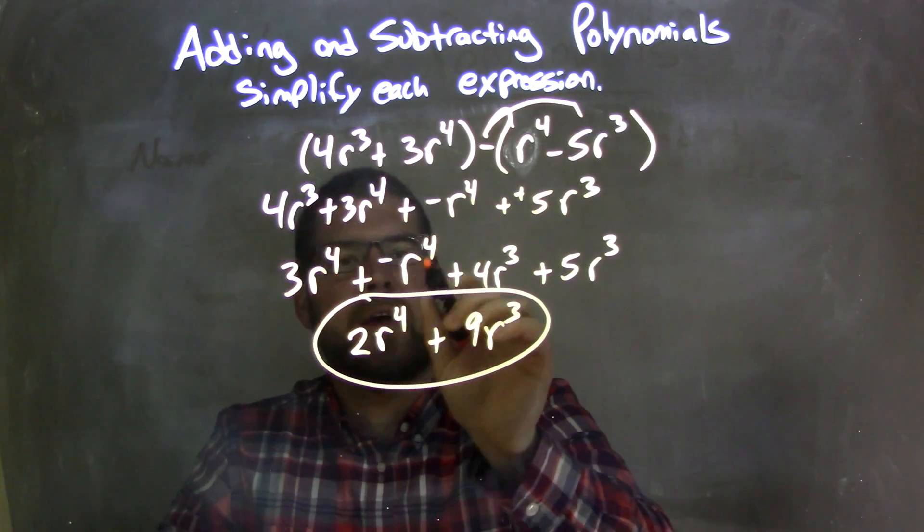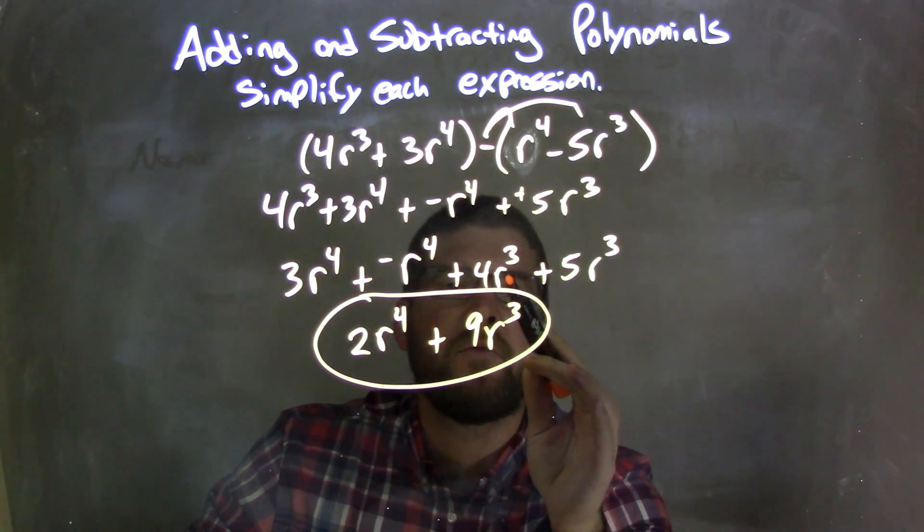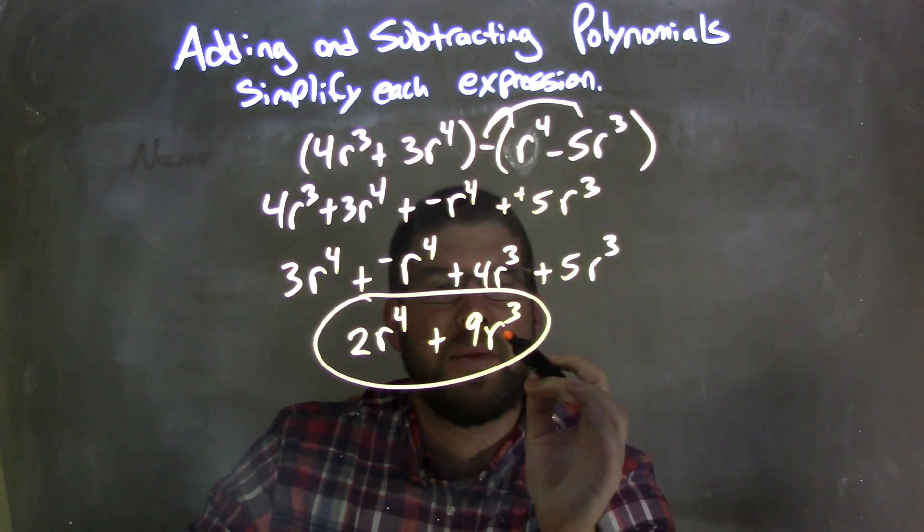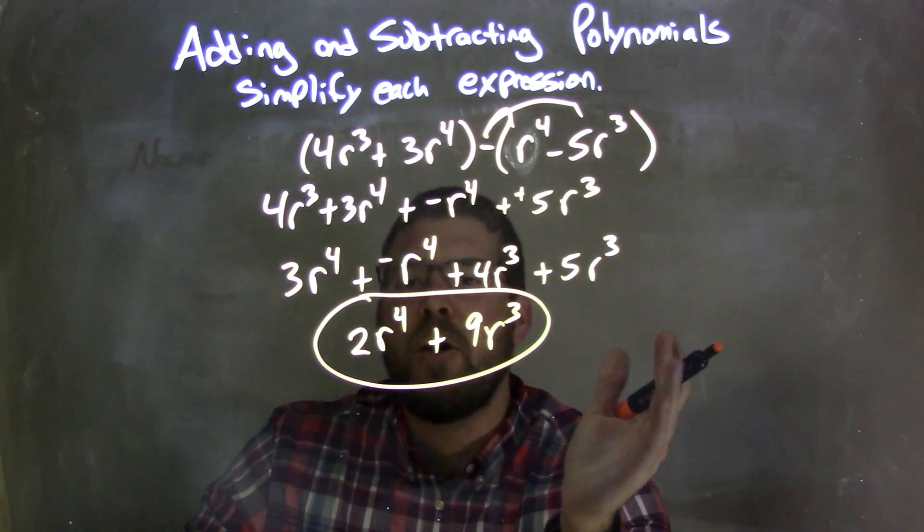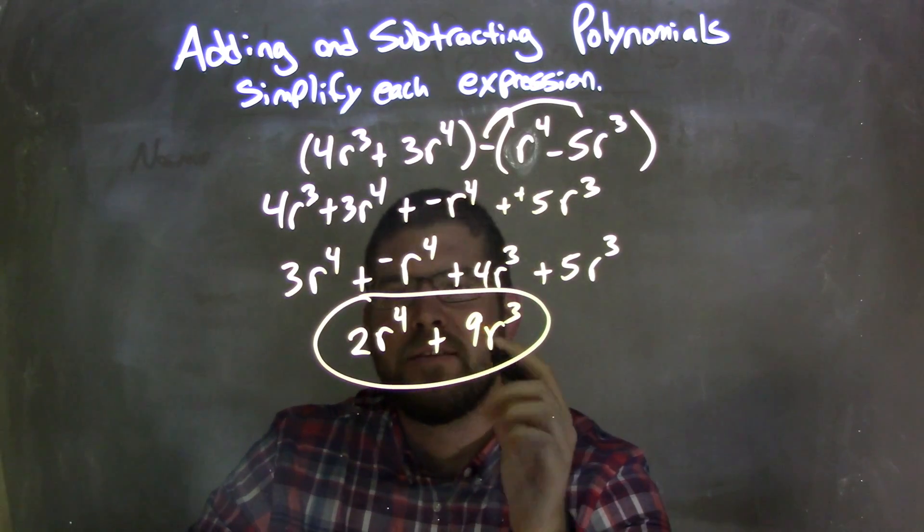3r⁴ plus a negative r⁴ giving me 2r⁴, and then 4r³ + 5r³ gave me 9r³. Now I have my final answer here, which is one simplified expression: 2r⁴ + 9r³.